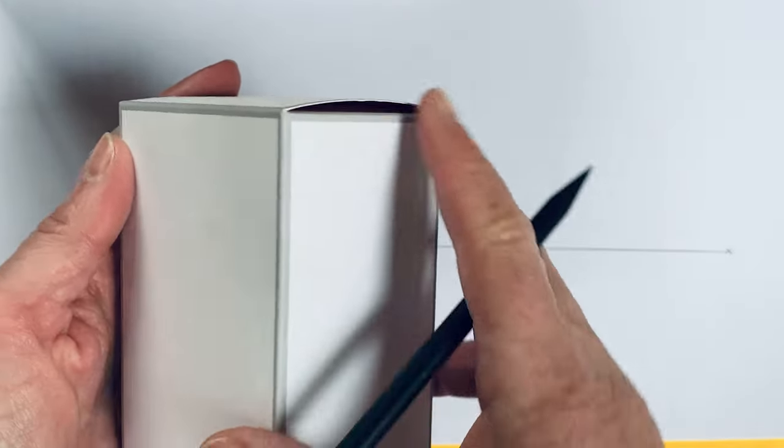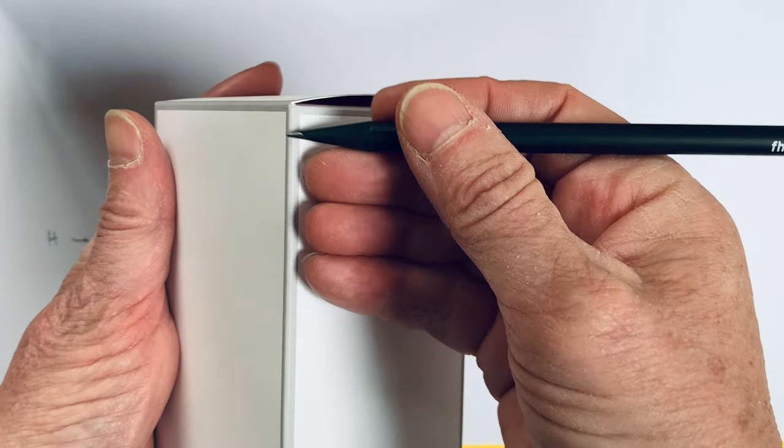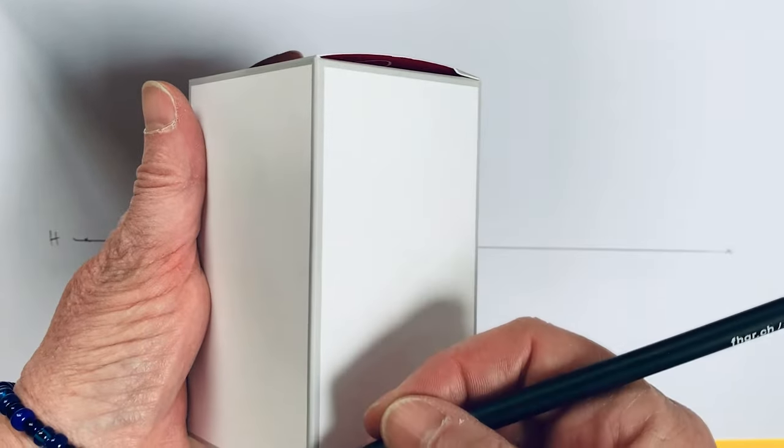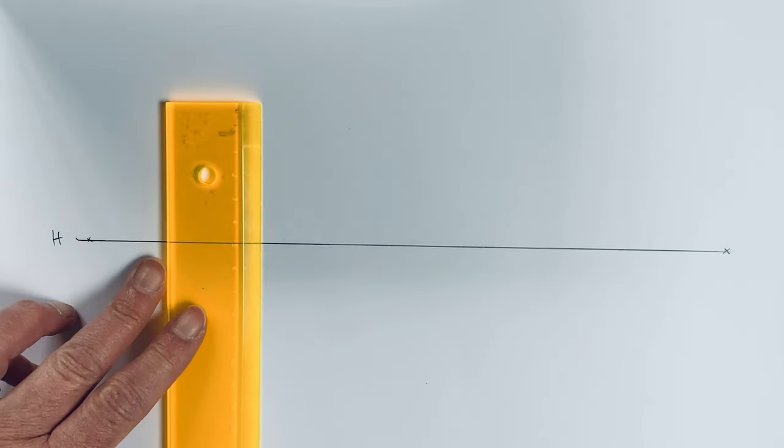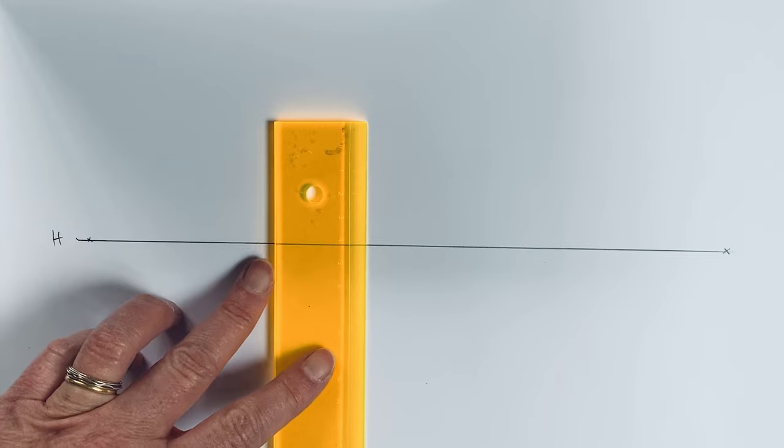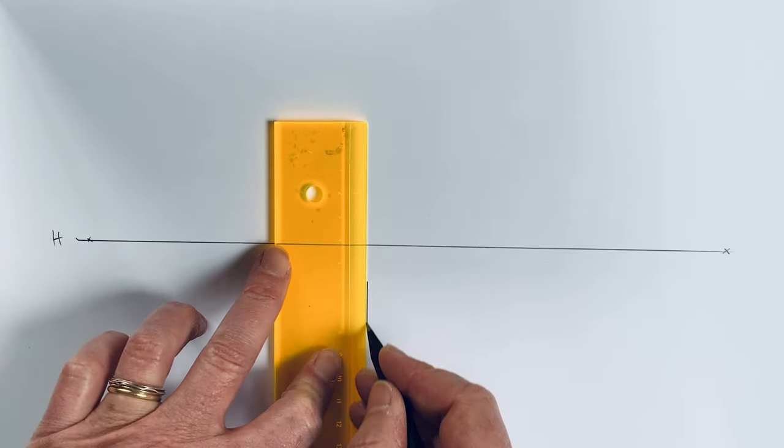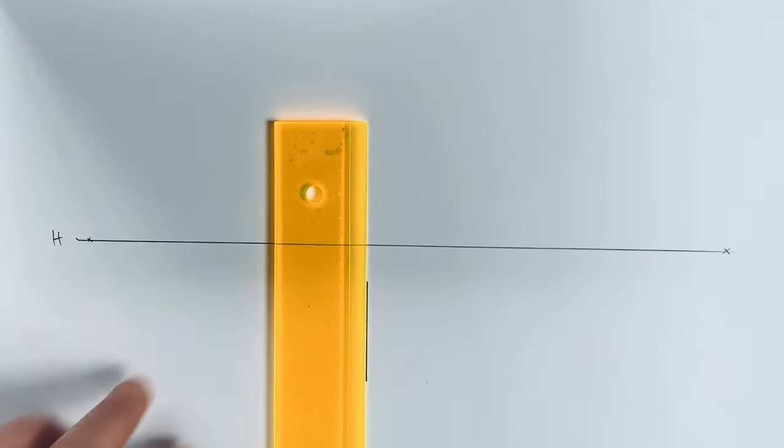And we start always when we have an object like this, we start always with one line that is in front of us. So the line that is closest to us, wherever this line is actually it's not important. If we do this construction I do this line here, so it's the easiest way to explain it to you.